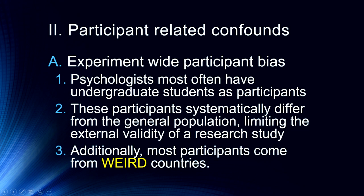Additionally, we have a big problem system-wide as psychologists in that most psychological research is conducted in Western, educated, industrialized, rich, and democratic countries — what we call WEIRD. You can see in a number of instances how those participants are different from the rest of the world. For example, the Mueller-Lyer illusion is a classic illusion we talk about in psychology, but it actually only occurs — or primarily occurs — in WEIRD countries. So we have to be very careful about where our participants are coming from and the conclusions we can make based on that.